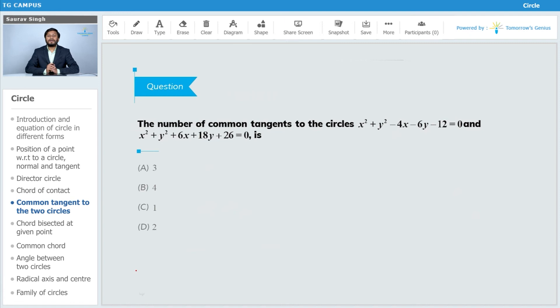Now the question here is to find the common tangents. First, we have to find C1. The center here is 2 comma 3, and the radius is g square plus f square, means 4 plus 9 minus c plus 12, so that is 25. So r is equal to 5.